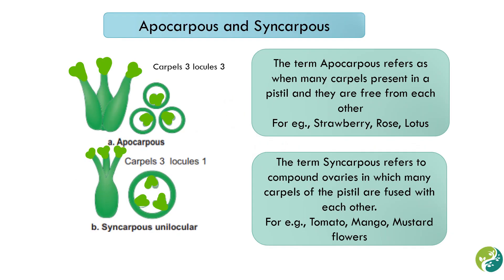Let's understand the terms apocarpous and syncarpous. The term apocarpous refers to when many carpels are present in a pistil and they are free from each other. As you can see in this picture, there are three carpels — one, two, three — and they are free from each other. When we do a cross-section of the ovary we see separate chambers, each chamber from each carpel. Hence it is said to be apocarpous. So when the gynoecium consists of two or more carpels and all the carpels are free, the ovary is said to be apocarpous.